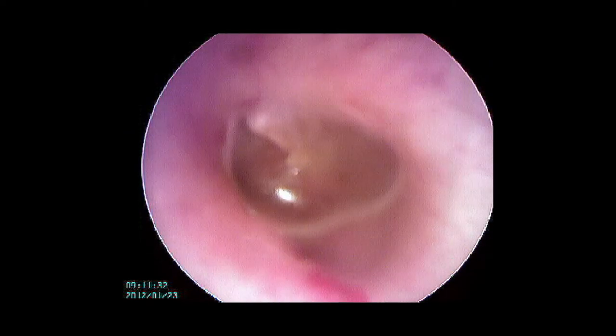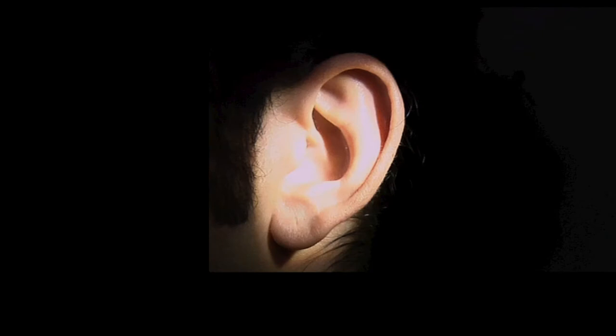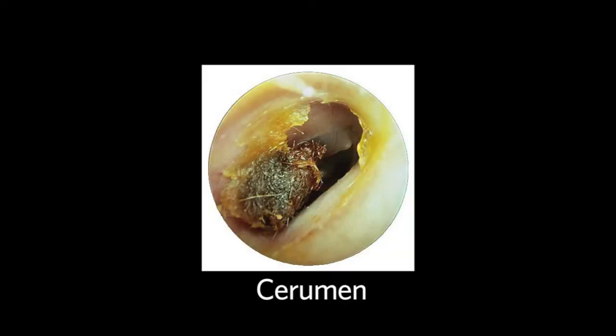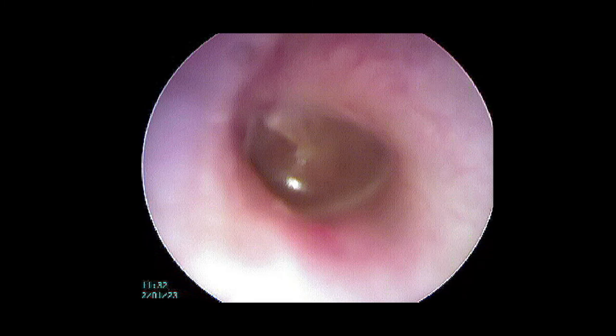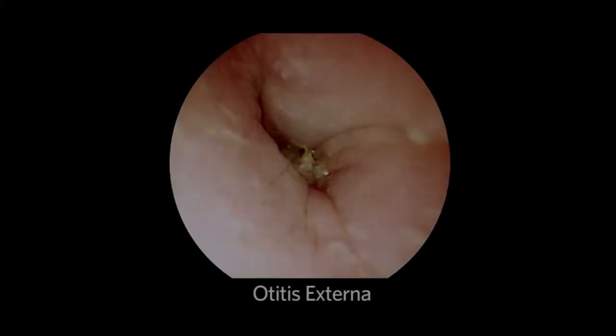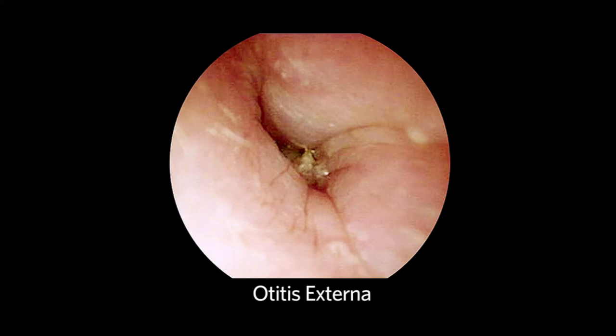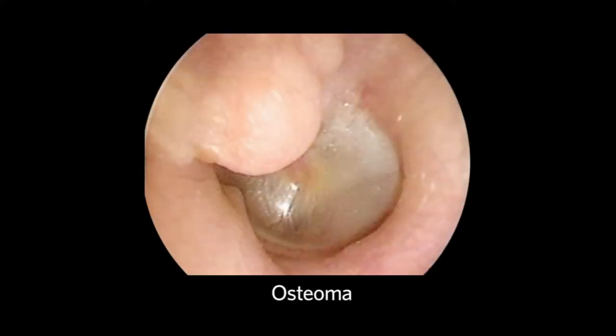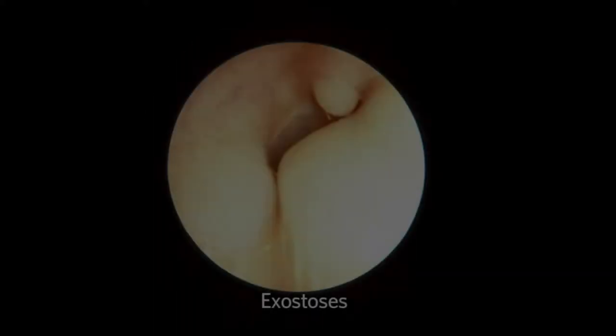The ear canal has a lateral cartilaginous and medial bony component. The cartilaginous component has the same color skin as the individual and contains the glands that manufacture cerumen. The bony canal skin is usually pink in color and thinner, and therefore sensitive when examined. Common abnormalities include cerumen impaction, otitis externa, an osteoma, and exostosis.